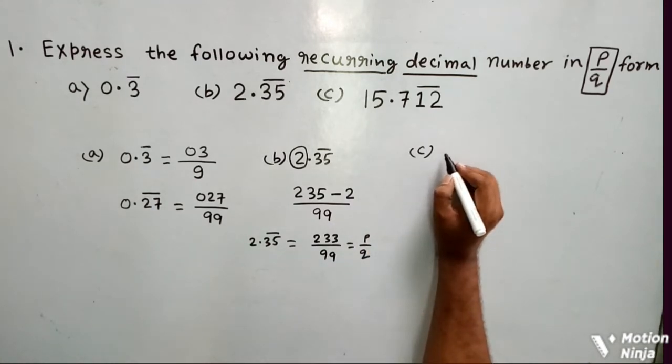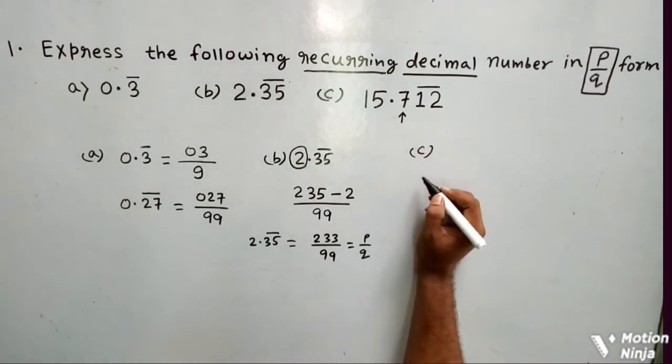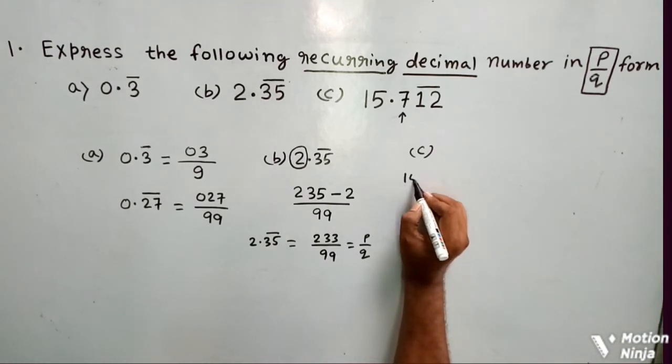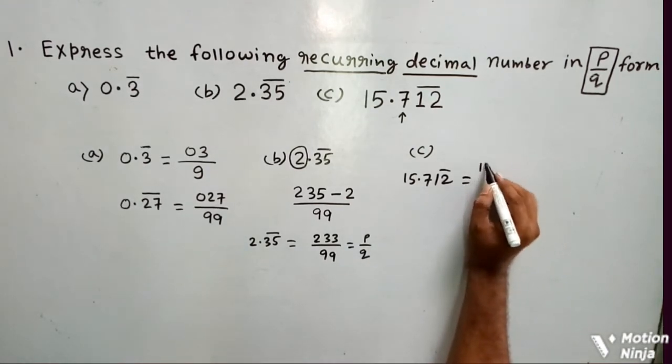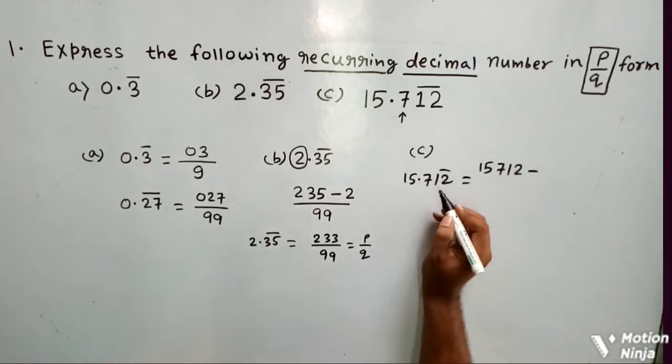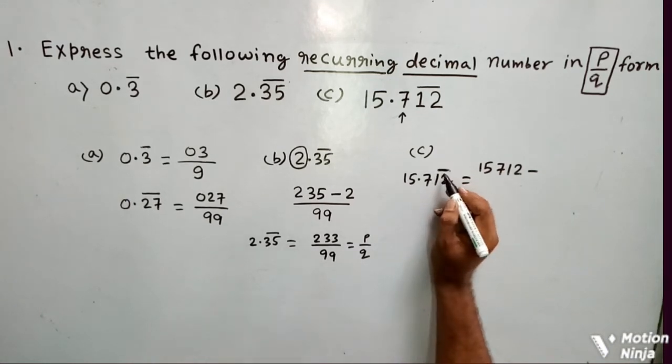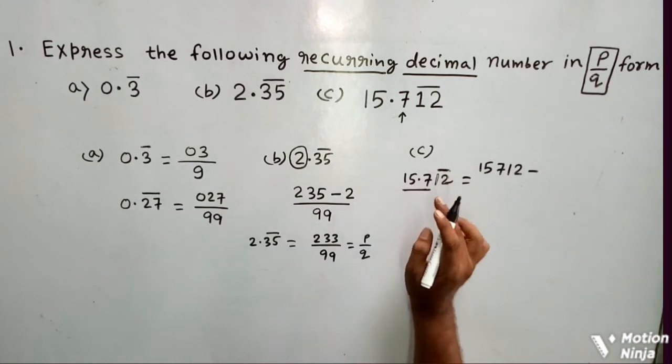Now in question number c, what do you find? After the decimal there is a number that has no bar. In that case there is a special trick. First you write all the digits, that is 15712. Then again give a minus sign. Now you see that before the digits where the bar is starting, that is before 12, there is 157. On those digits 1, 5, and 7 there is no bar, so you will subtract...